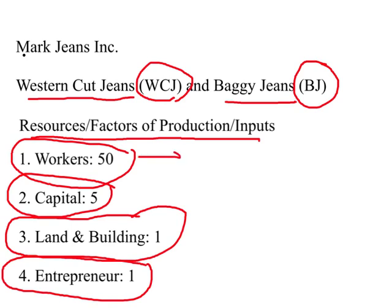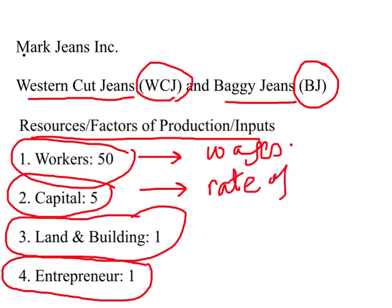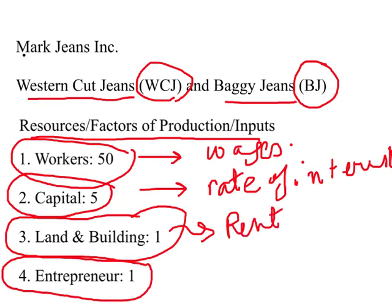To employ these different factors of production, Mark pays wages to workers. He borrowed money to buy machines, so he pays a rate of interest on them. On the land and building, Mark pays rent. The profits made by the firm are kept by Mark himself.